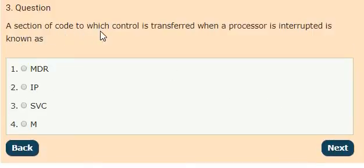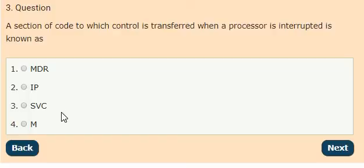Question 3: A section of code to which control is transferred when a processor is interrupted is known as options: MDR, IP, SVC, M. The answer is option 4, M.